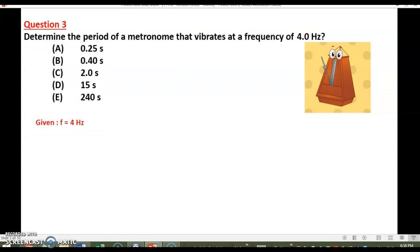Question three. Determine the period of a metronome that vibrates at a frequency of 4 hertz. So we are given the frequency of a vibratory object and we are asked to calculate its period. So the direct relation between period and frequency, T equals 1 over f, is equal to 0.25 seconds. So this is choice A.